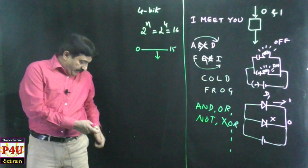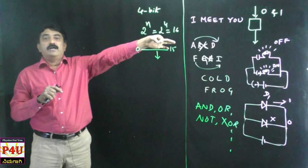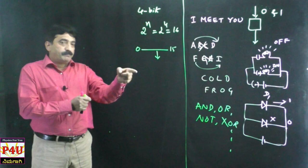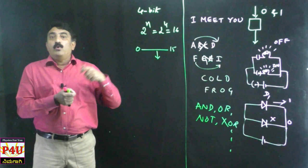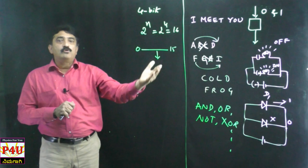Even though it does 16 calculations, at any given time it gives only one result — just like you take out your wallet and pick one currency note at a time. Very next moment it gives one more. So our classical computers have 0s and 1s, gates, registers, and registers can perform 2 to the power of n operations — that is our classical computer.